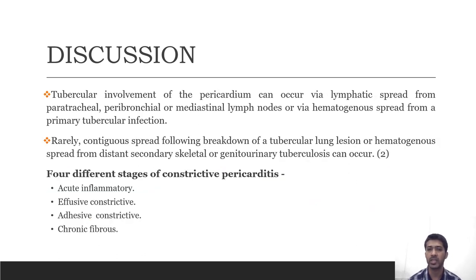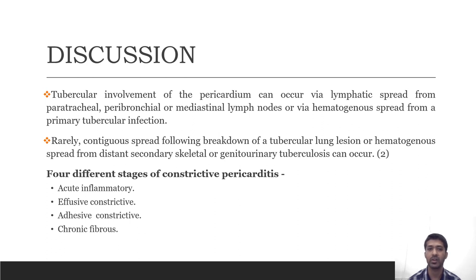Tubercular involvement of the pericardium can occur via the lymphatics from the paratracheal, peribronchial or mediastinal lymph nodes, or via hematogenous spread from the primary tubercular foci. Rarely, contiguous spread from a tubercular lung lesion or hematogenous spread from distant skeletal or genitourinary sites can occur.